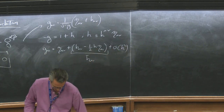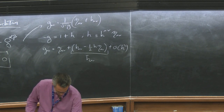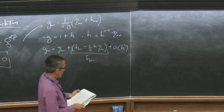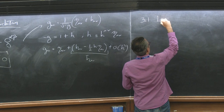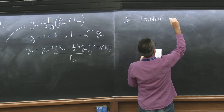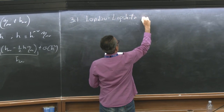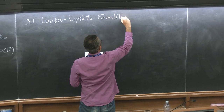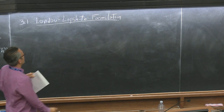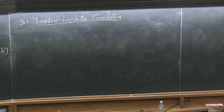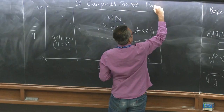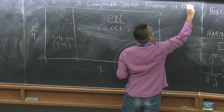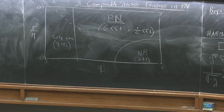So the H-mu-nu that we use in post-Newtonian theory is like the trace-reversed metric perturbation that you would use in first semester GR. That's the mapping between those two things. Now that we've introduced a little bit of notation, let's begin — as we should always begin — with Landau. Let me introduce the Landau-Lipschitz formulation of general relativity. The topic here is comparable mass binaries in PN theory.